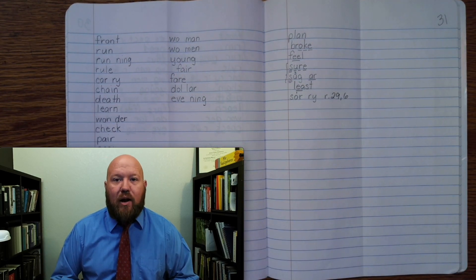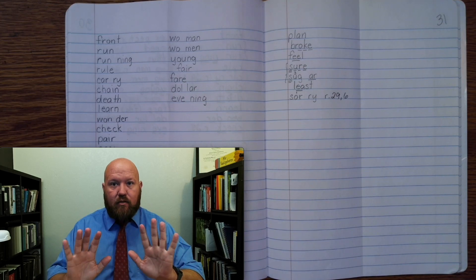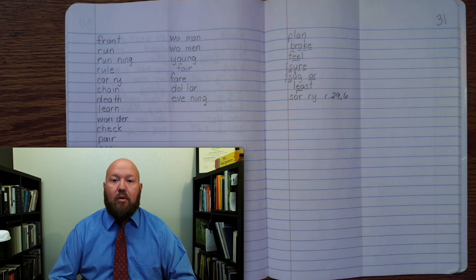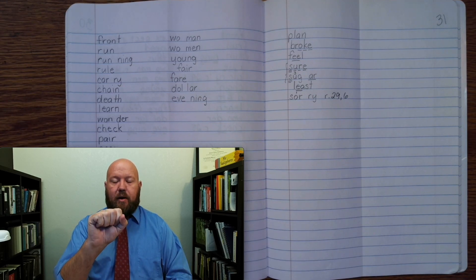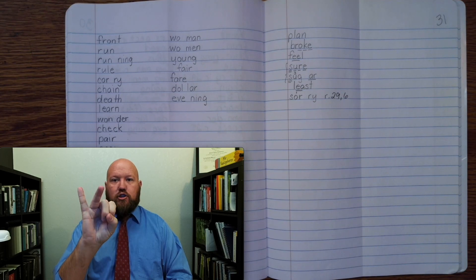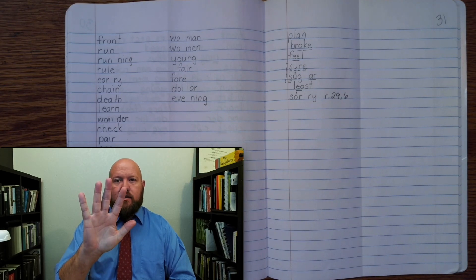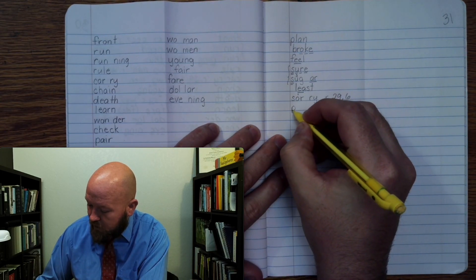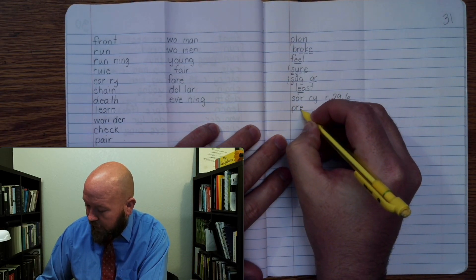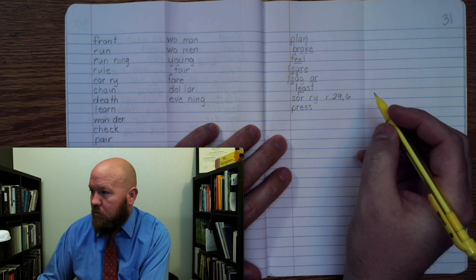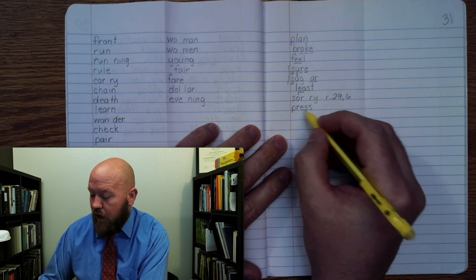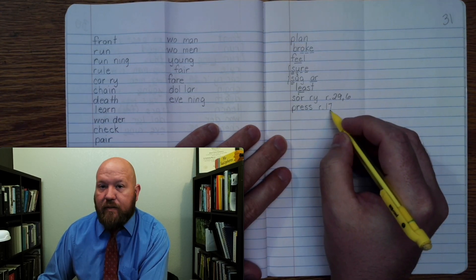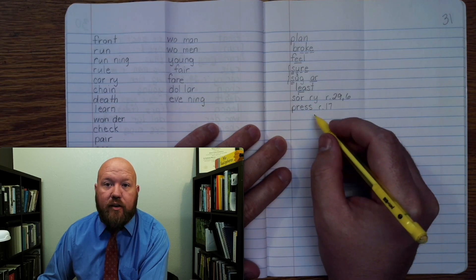The next word is press. Like, if you push something, you're going to press it. Right? Or, we can think of press as like the people who report the news. That is, the press. Press. Base word, press. P-R-E-S-S. Okay, so double S at the end. Right? Press. P-R-E-S-S. Markings. P-R-E-S-S. Rule 17. Rule 17. Words that end of the nest will often double at the end.